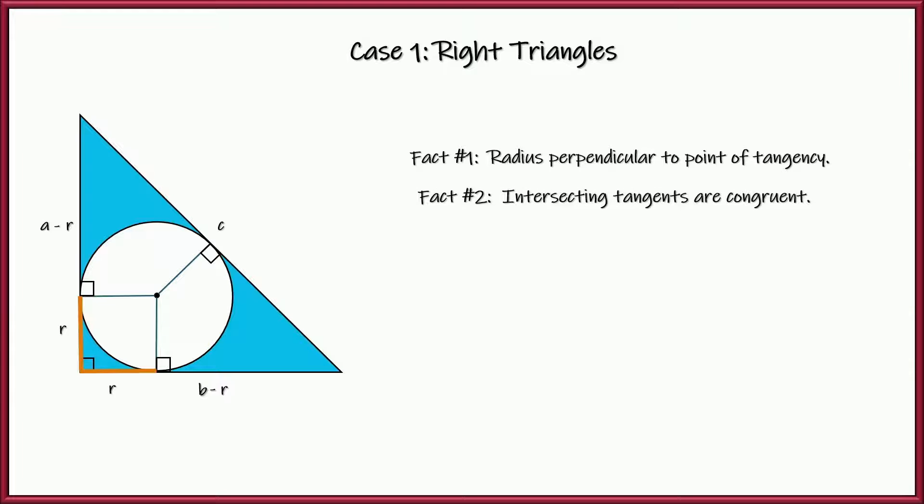All right. So now the next fact that we're going to have to use is that when tangent lines intersect, those segments from the point of tangency to the intersection are congruent. So for example, right here, we have A minus R on the left. Well, this side would also be A minus R. Both of these are tangent to the same circle, so their segments are congruent, and the same is the case for B minus R. So now side C is also equal to A minus R plus B minus R.